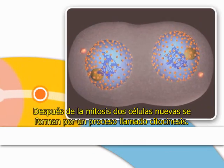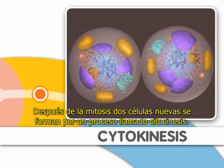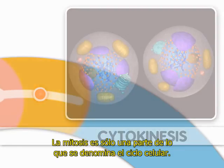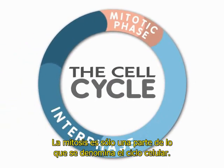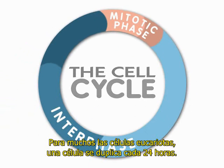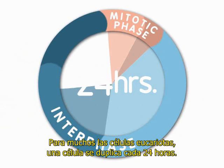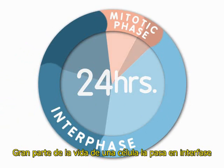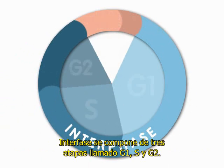After mitosis, two new cells are formed by a process called cytokinesis. Mitosis is only one part of what is called the cell cycle. For many eukaryotic cells, a cell is duplicated every 24 hours. Most of the life of a cell is spent in interphase, which consists of three stages called G1, S, and G2.